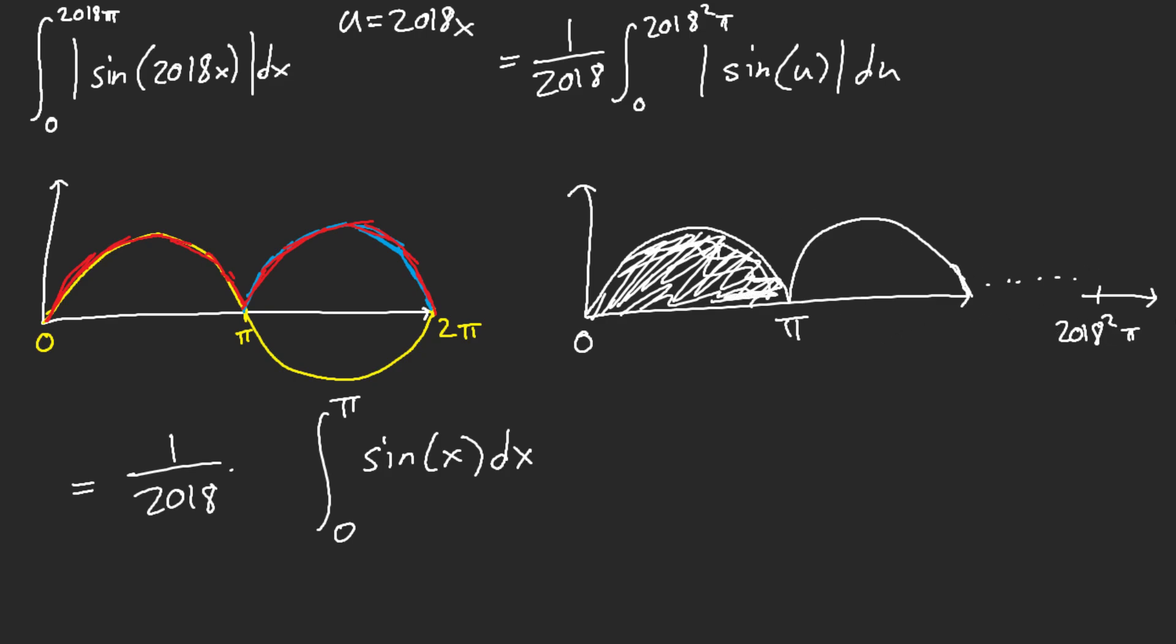But how many hills, though? 2018 squared, right? This is 1. 2 pi here, that's 2 hills all the way up to 2018 square.